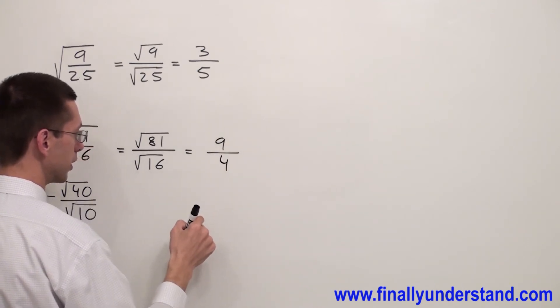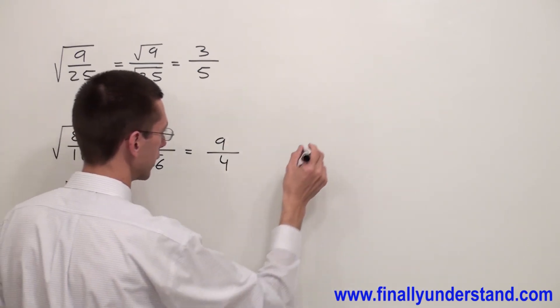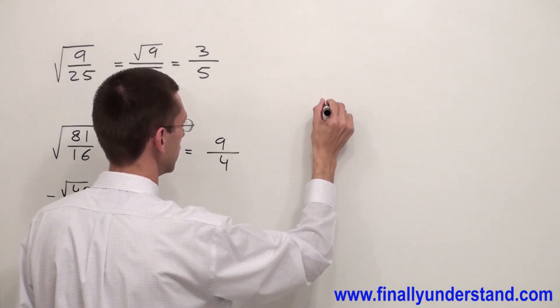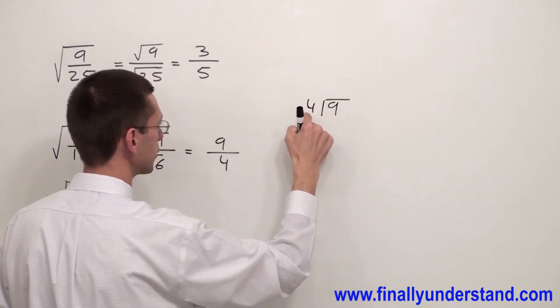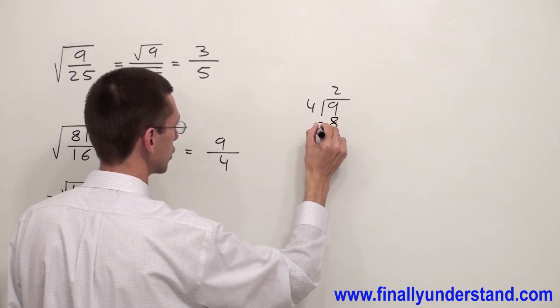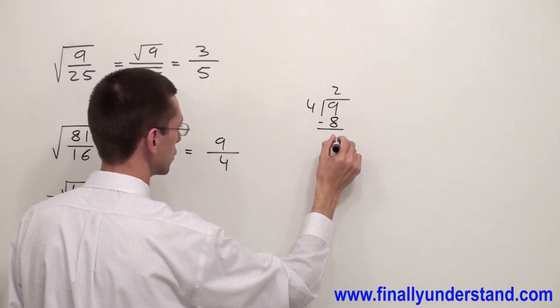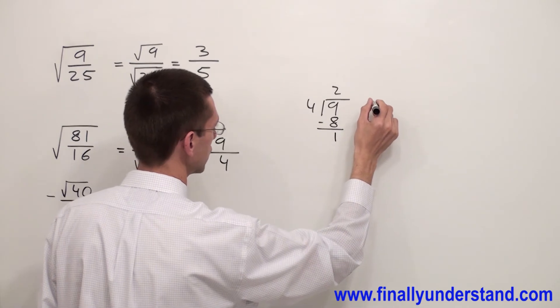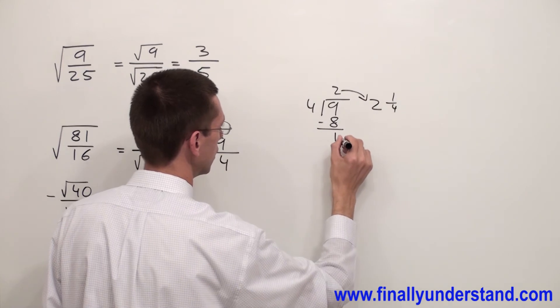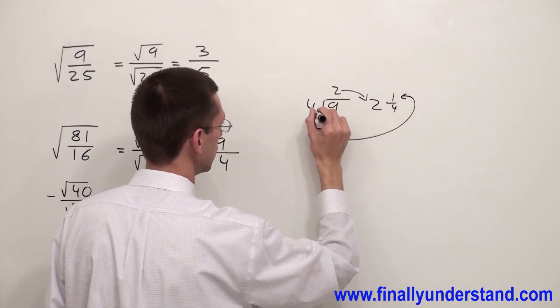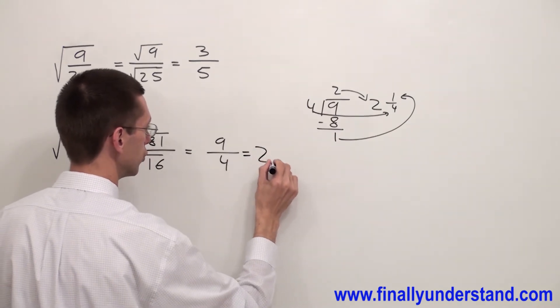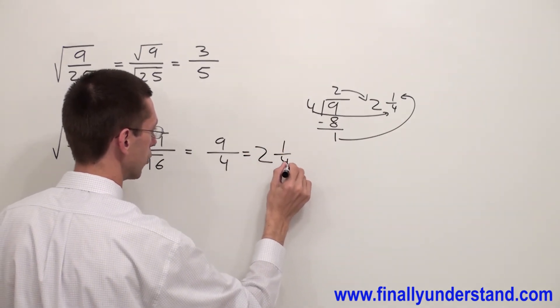This is an example of an improper fraction, so I'm going to convert the improper fraction into a mixed number by simply dividing 9 by 4. How many times does 4 go into 9? 2 times. 2 times 4 gives me 8. Subtract: 9 minus 8 equals 1. So the answer is 2 and 1 fourth. Remember, 2 goes to the front, remainder goes to the numerator, and divisor goes to the denominator. So the answer for my problem is 2 and 1 fourth.